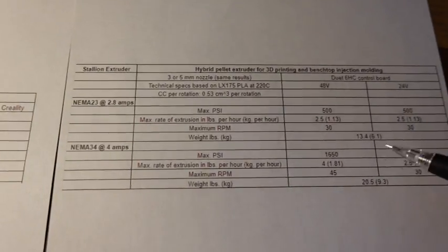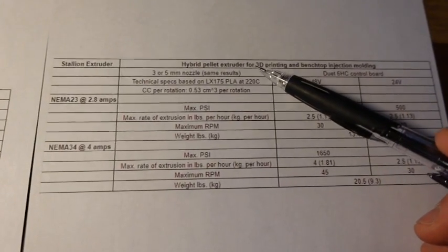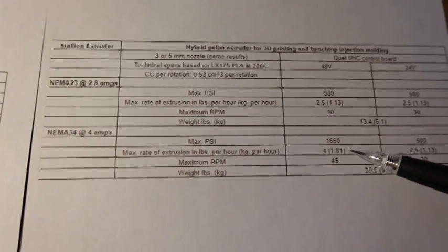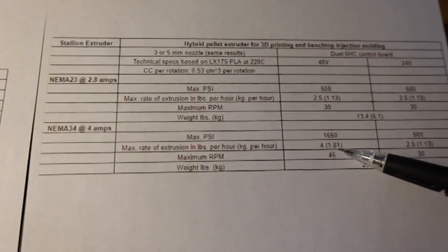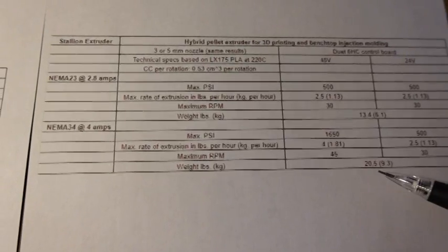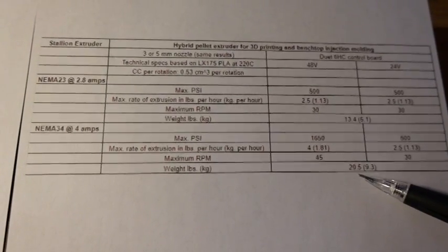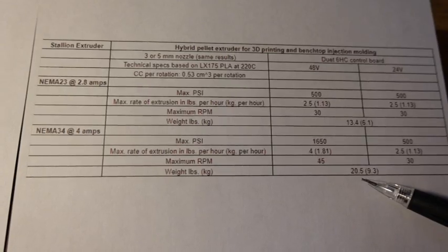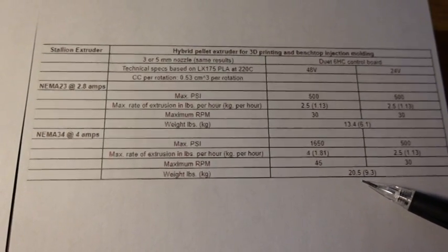Now if you want to print something big, you can use the stallion extruder. It'll output over 10x that amount of the Mehor. But you have to take into account it weighs over 10x as much, so you need a much beefier system.